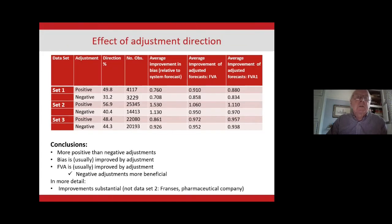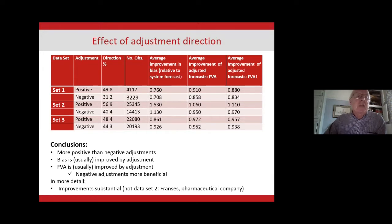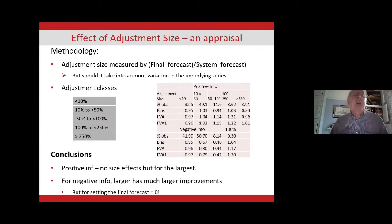Breaking down the mixed results: there are more positive than negative adjustments, bias is usually improved by adjustment, negative adjustments are more beneficial, but positive adjustments are also beneficial — just not very beneficial. The improvements are not substantial and for data set two barely matter at all. Coming out of this analysis knowing something not previously known: the adjustment process overall is usually positive for forecast value added.